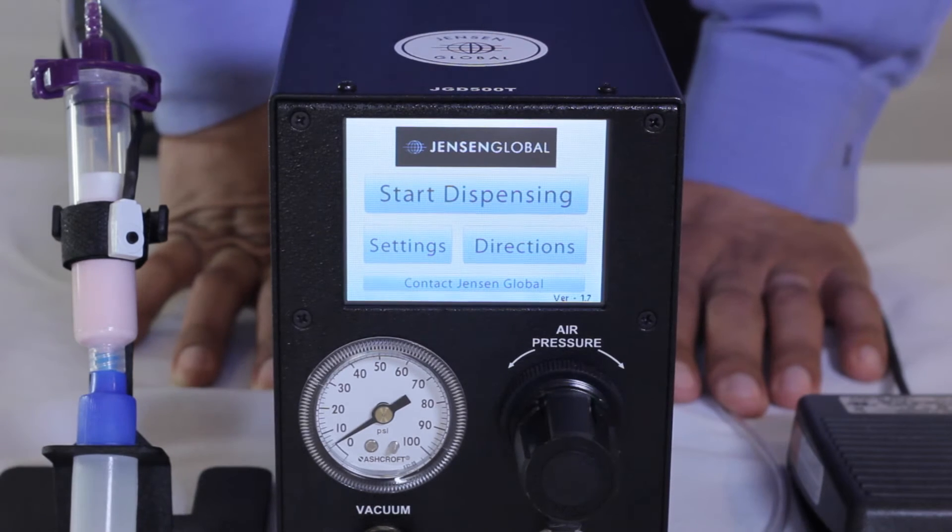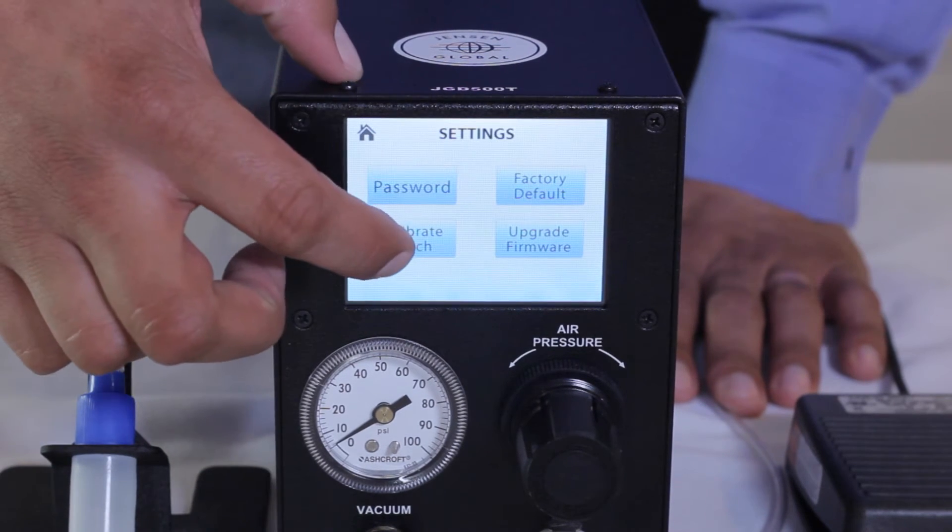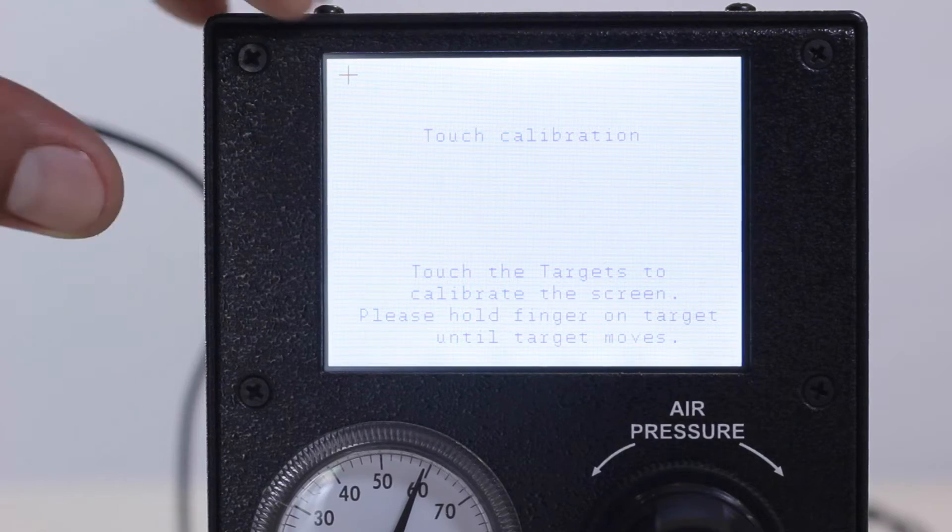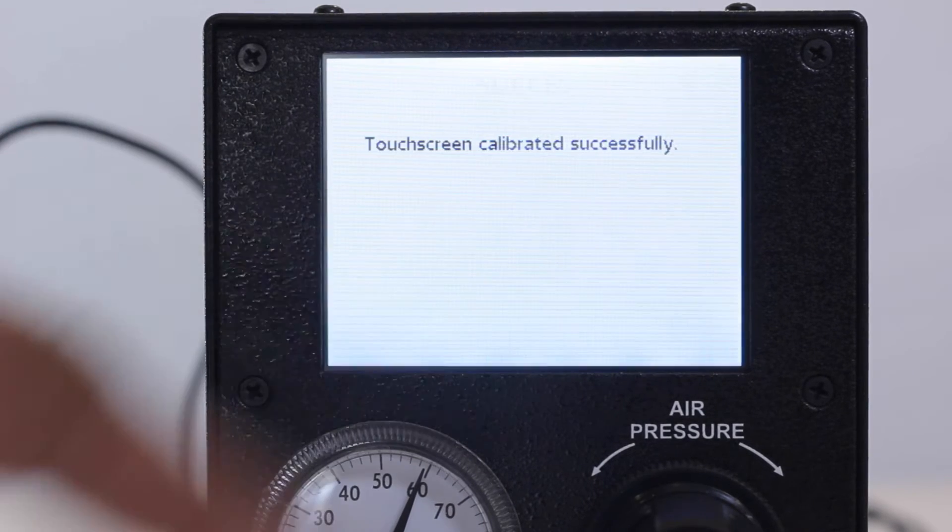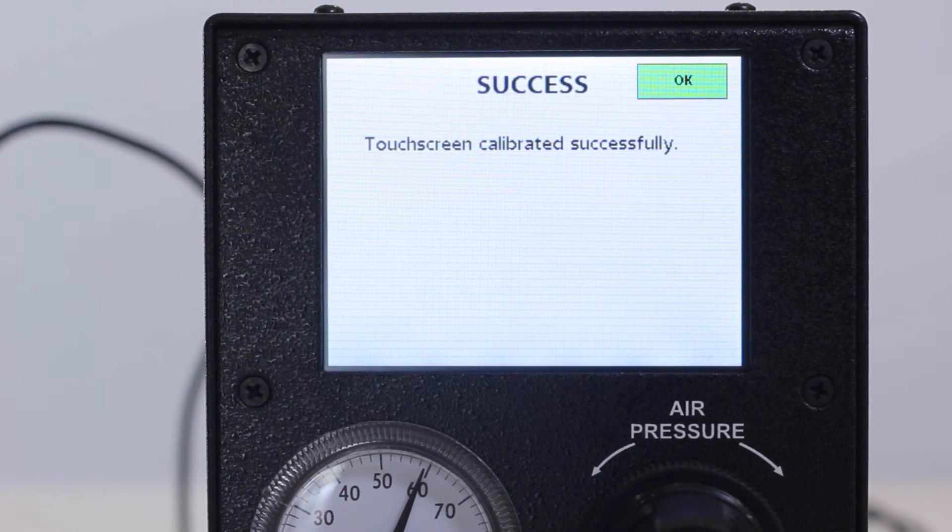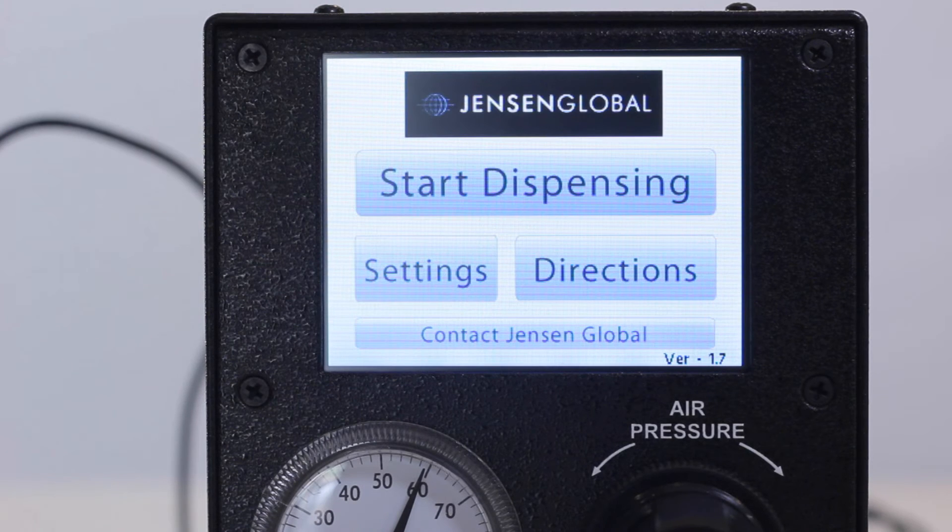Prior to first use, it is best to calibrate the unit to allow for best accuracy. Press the Settings tab and then press Calibrate Touch. Using your finger, press the plus sign and follow the prompts till your unit reads Calibration Done. Tap the screen to return to the Settings screen. Press the Home button to return to the main menu.